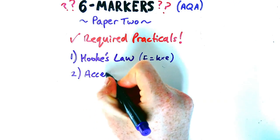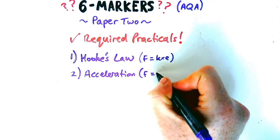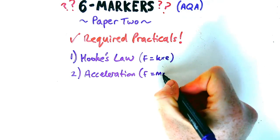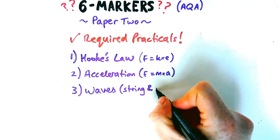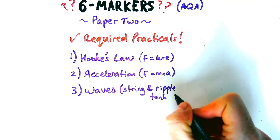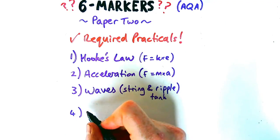The first one is to do with Hooke's Law or force and extension. The second one is to do with acceleration, or sometimes force and acceleration, which is Newton's second law. The third one is to do with waves. There's two versions: waves on a string and waves in water in a ripple tank.